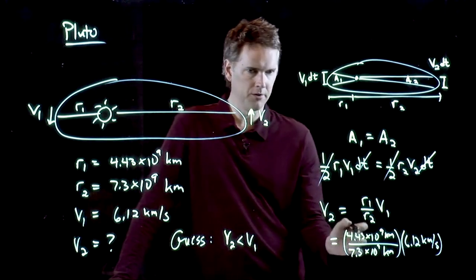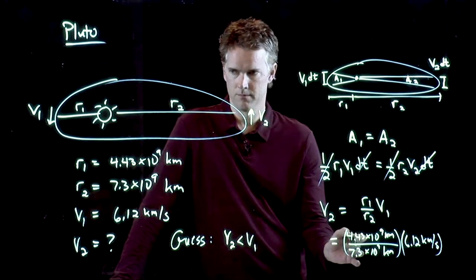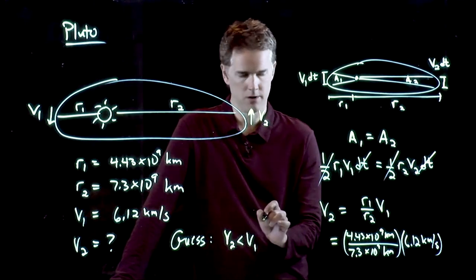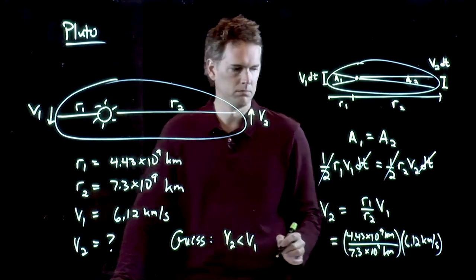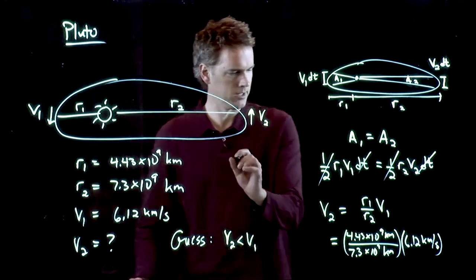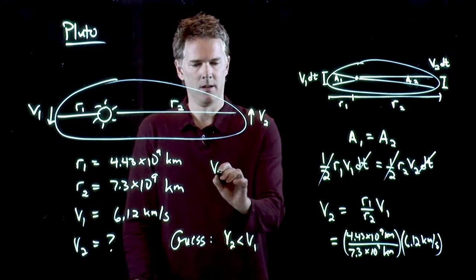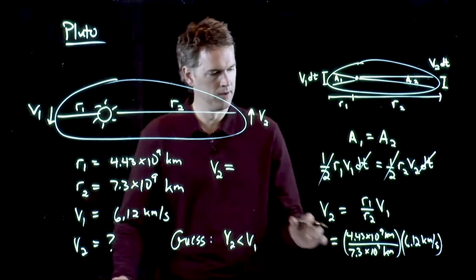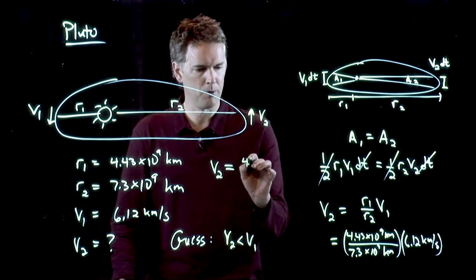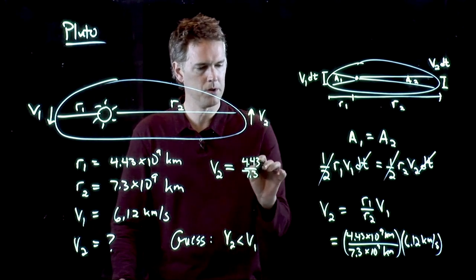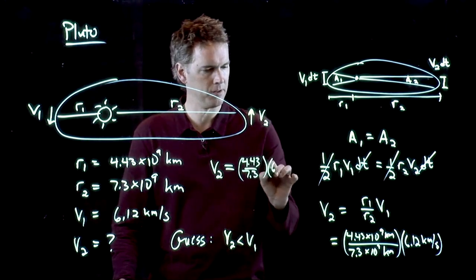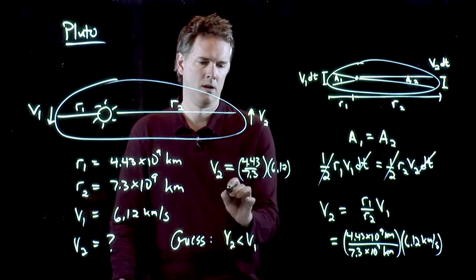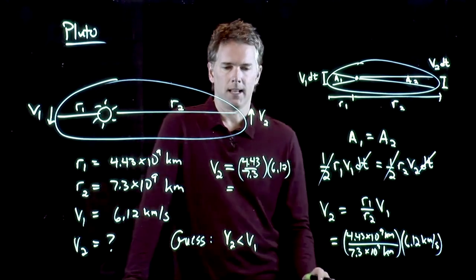This number is certainly less than one. Our guess is going to hold for sure. What's the actual number? I don't know. Punch it into your calculator and tell me what you get. I will approximate it here. So we've got 4.43 over 7.3. We're going to multiply that by 6.12.